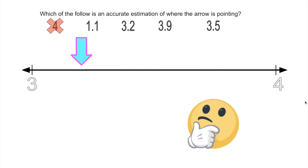And there's another one I can eliminate right away. Because look, this number line is from three to four. So that means our number where this arrow is pointing is greater than three but less than four. This is one and one tenth — that's out. Now, all of these decimals I have left are in fact more than three but less than four. So now we've got to make a decision.